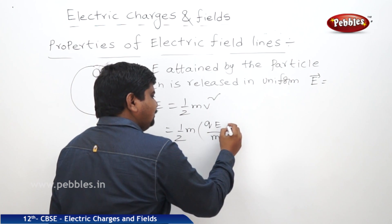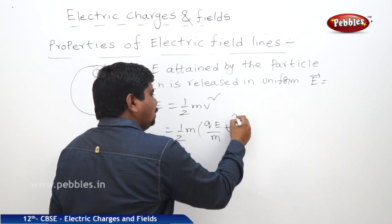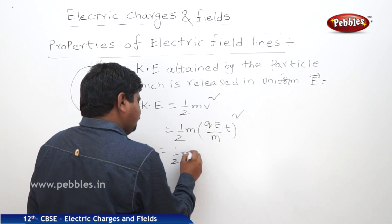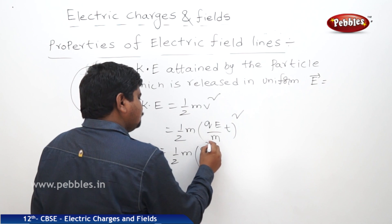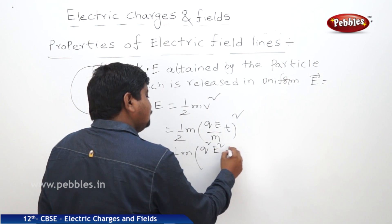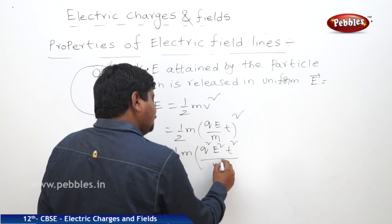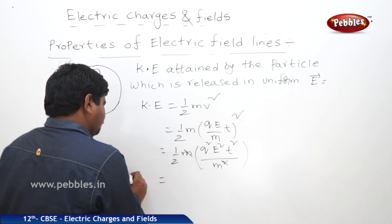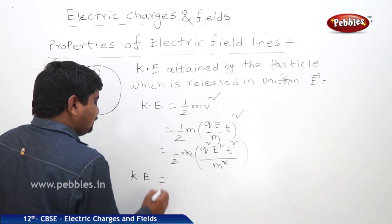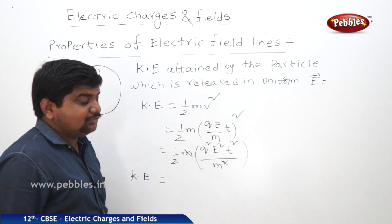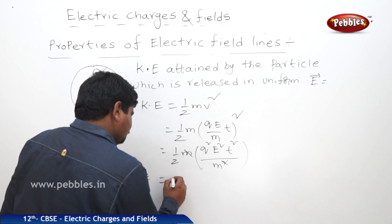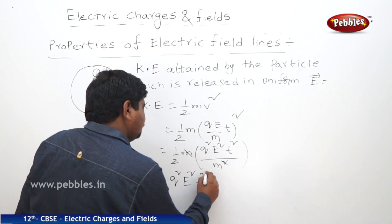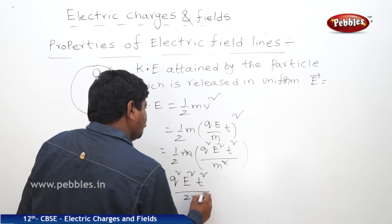Substituting V equals QE by M into T: KE equals half m into (QE by M into t) whole squared, which gives half m into Q squared E squared t squared by M squared. M and M squared cancel out, giving KE equals Q squared E squared t squared by 2M.